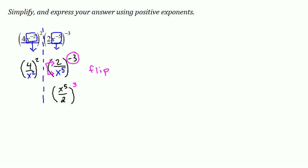I'm ready to bring the power of 3 to the numerator and denominator, cubing both expressions. x to the power 5 raised to the power 3 is power to a power, so I'll multiply the exponents. In the denominator, 2 to the power 3 is 2 cubed, which is 8.